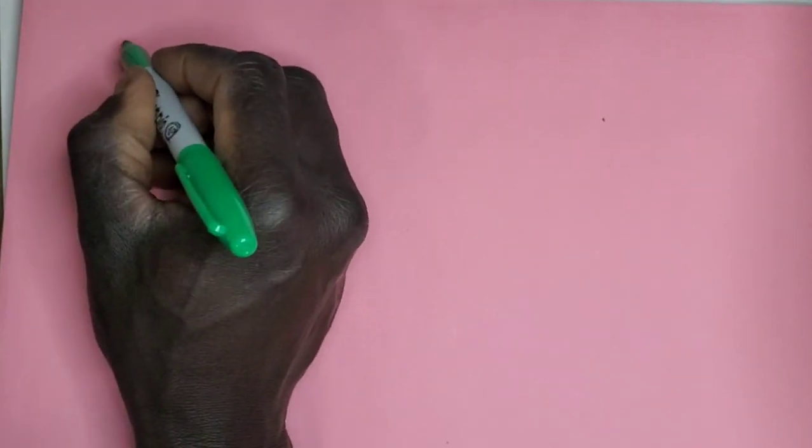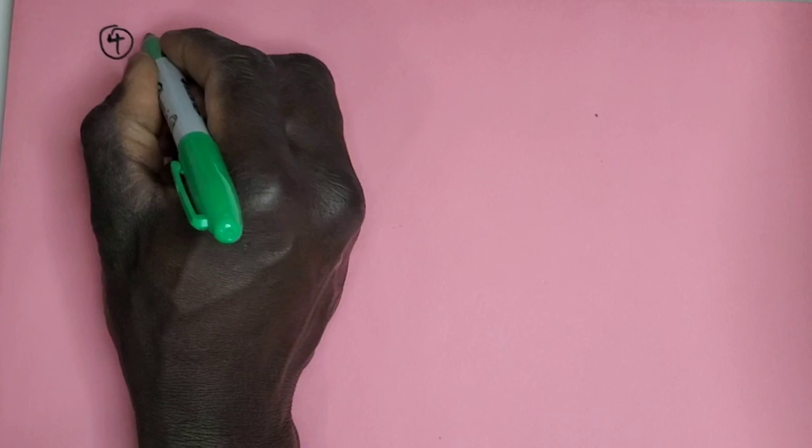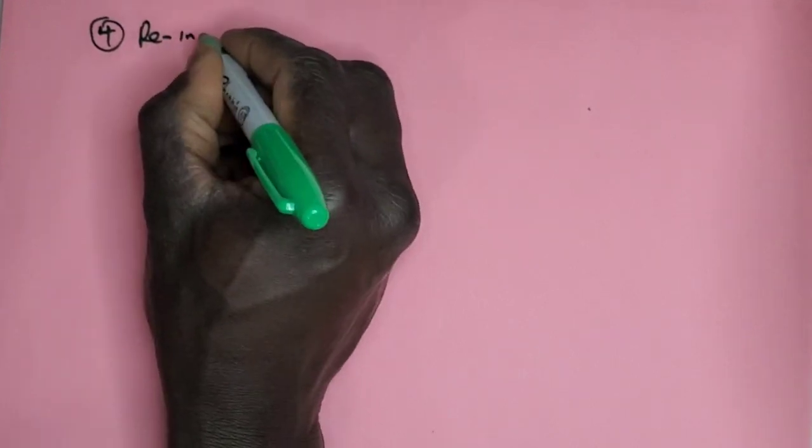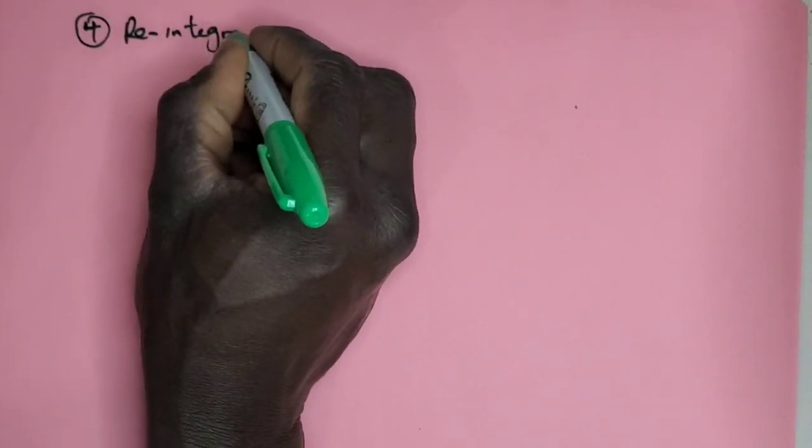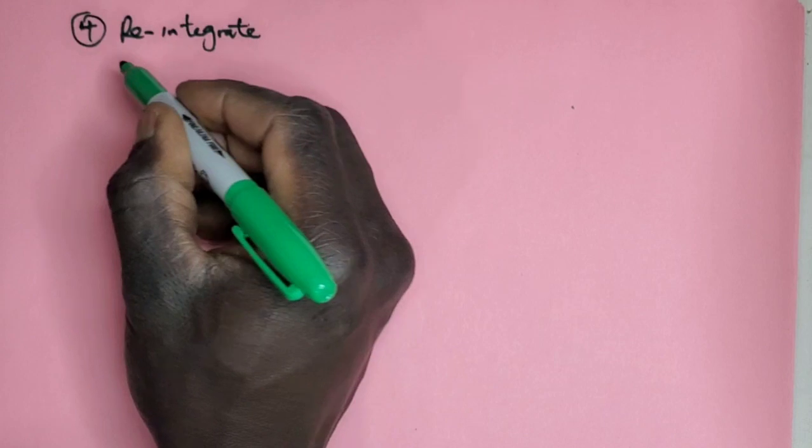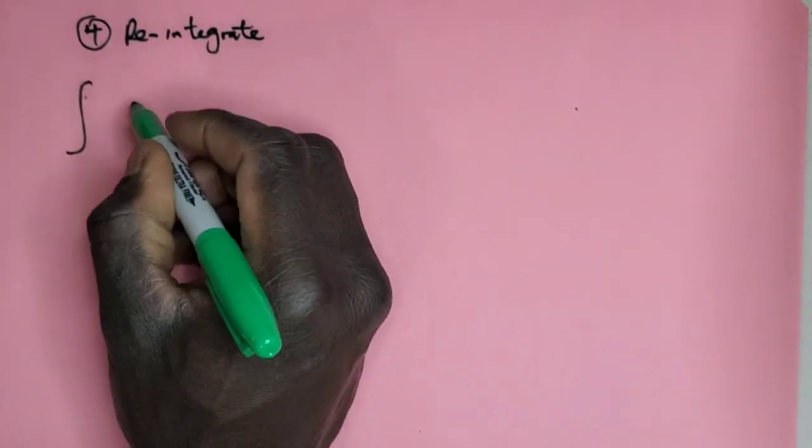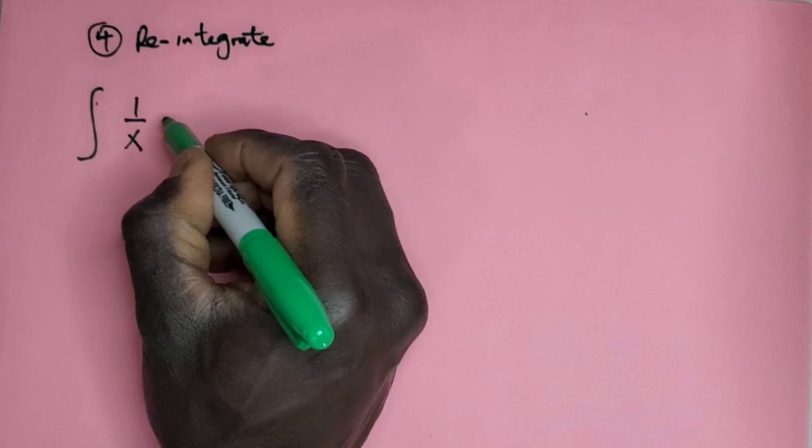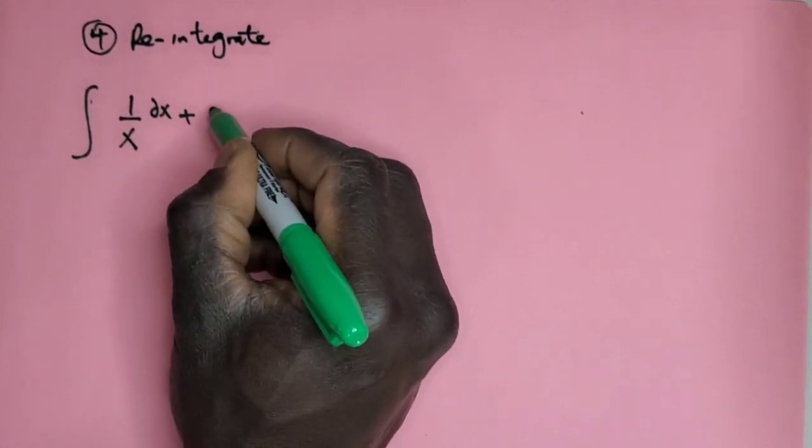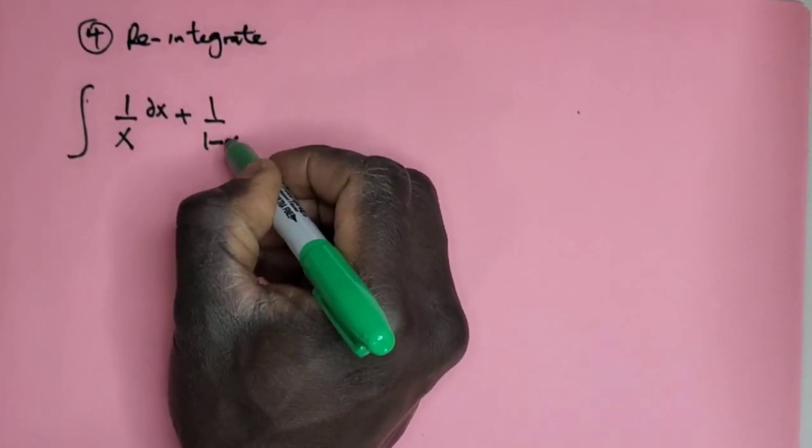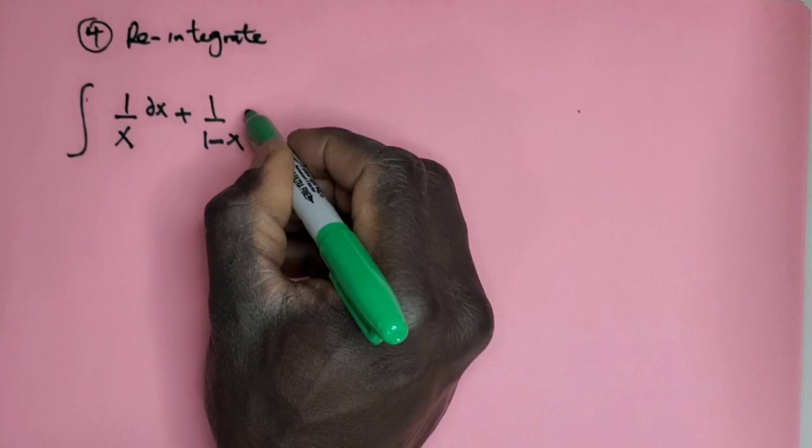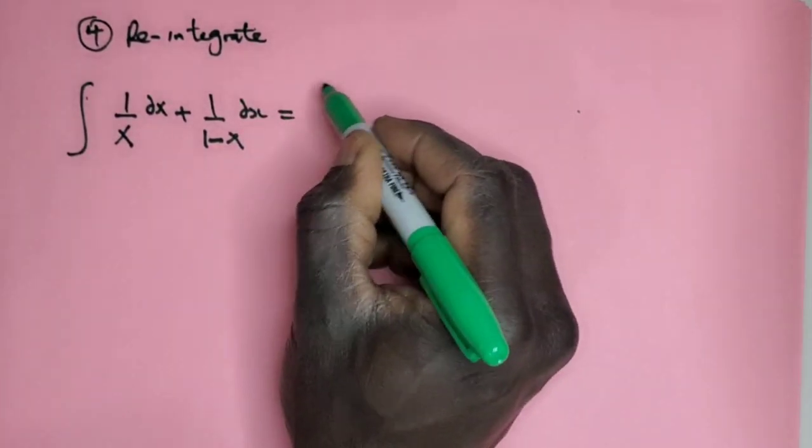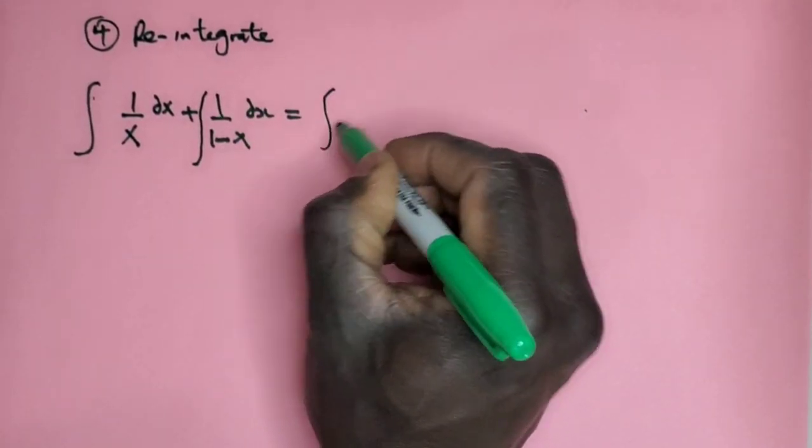Now let's integrate that. Reintegration, so going to be number 4, we integrate. So we're going to be integral of 1/x dx plus integral of 1/(1-x) dx = integral of dt.